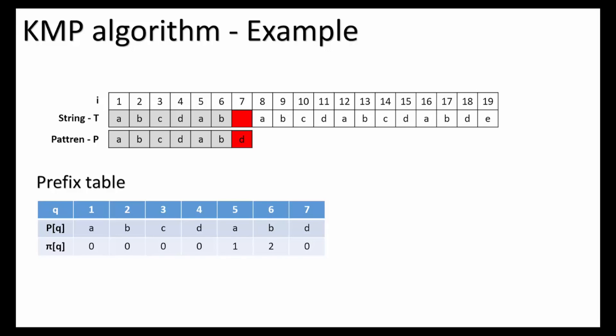But the blank space and the d are mismatched. So now we check the prefix table. Pi[6] is equal to 2. Thus we shift the pattern P to the right, 6 minus 2, 4 times. We now know that the two characters a, b are already successfully matched. But the blank space and the c are mismatched. So we check the prefix table pi[2], which is equal to 0. Thus we shift the pattern to the right, 2 minus 0, 2 times.